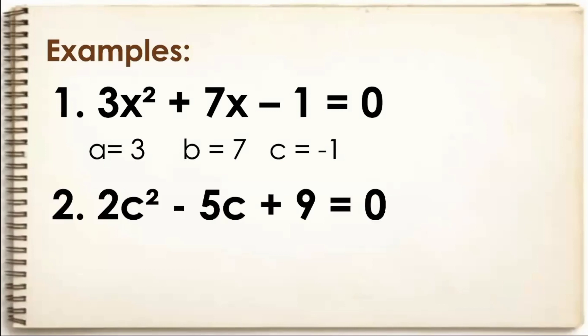Next, we have 2c² − 5c + 9 = 0. The value of A in this equation is positive 2, B is equal to negative 5, and the value of C is equal to positive 9.